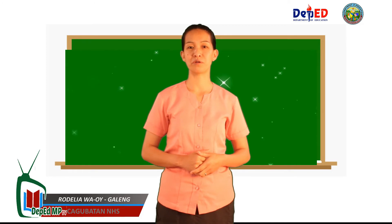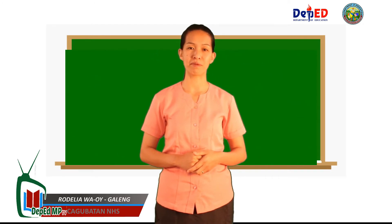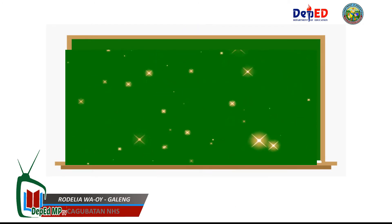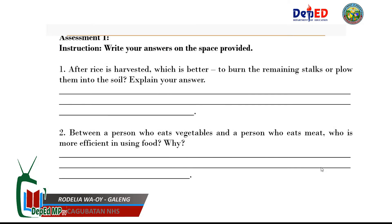Kindly answer the following questions based on what we have learned. You may go back if you forgot some important information. Activity 1: Problem Solved. People are the top consumers in many food webs. To increase food production, they use methods which may disrupt food chains or food webs. They have learned how to make decisions to correct these mistakes. Write your answers on the space provided.